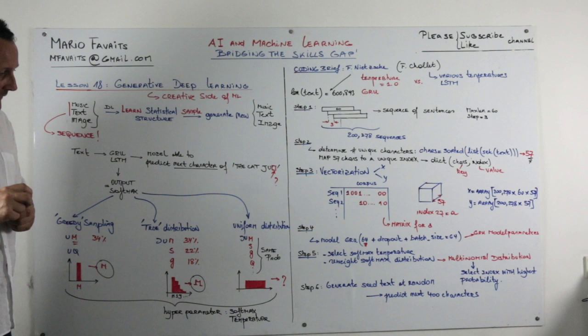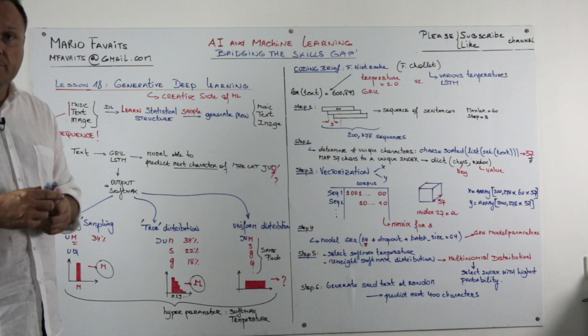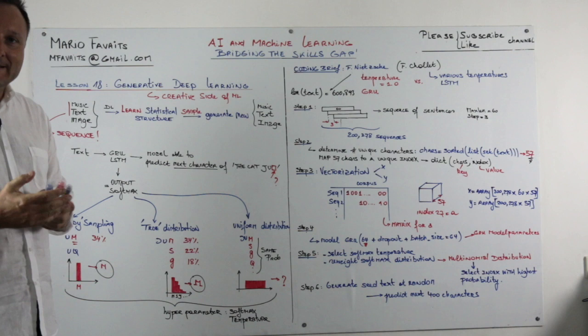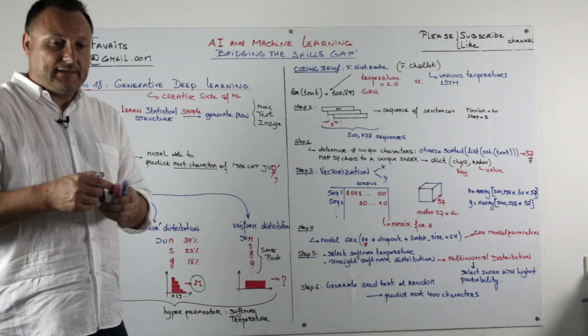So we re-weigh our softmax distribution. And in this case we will use a multinomial distribution. It is like rolling a dice, where you do one test and you check what the outcome is. And of course at the end we will select the index with the highest probability.